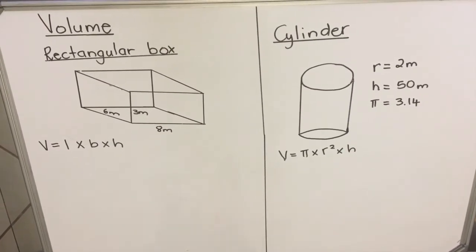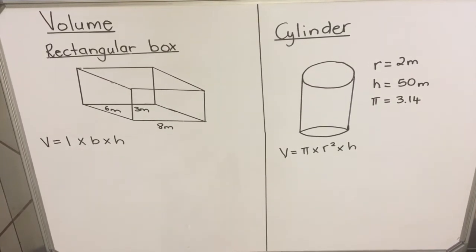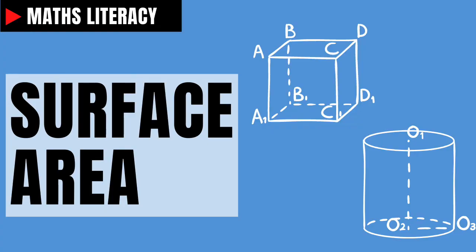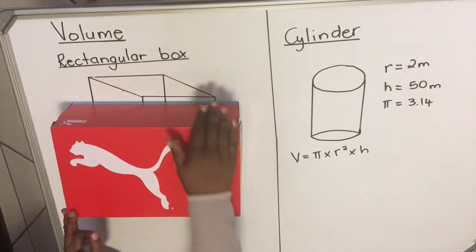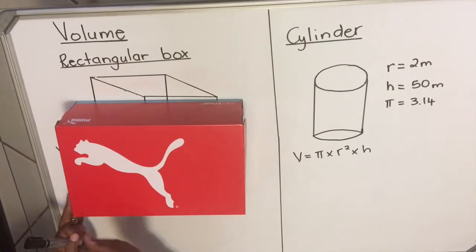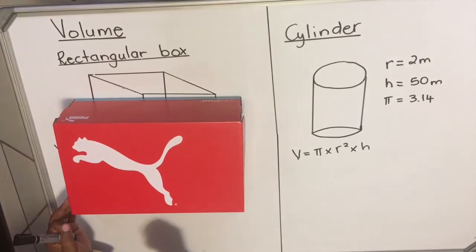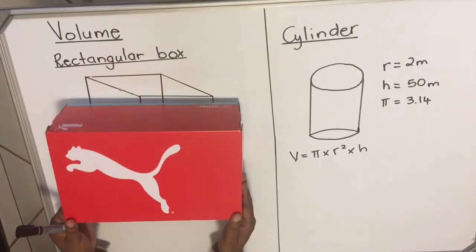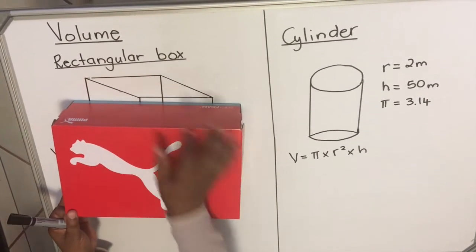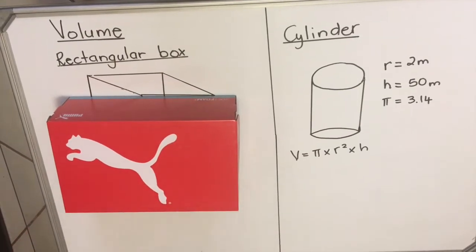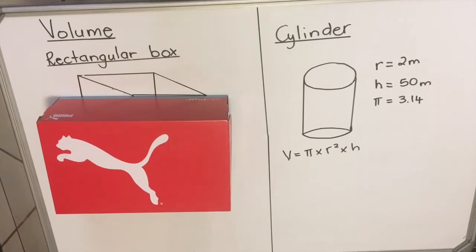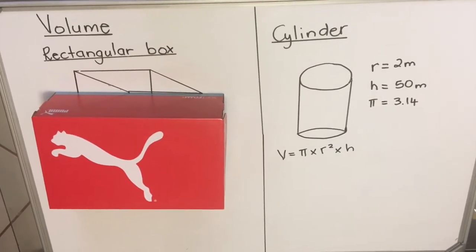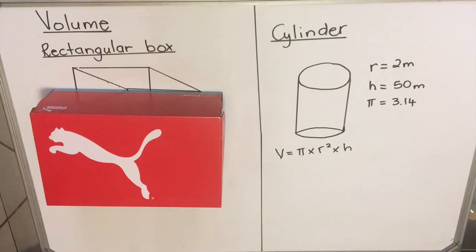Before we do that, I want to explain what volume is. When you look at this box, in our last video we did the surface area. Surface area is the outside part — all the faces of the box. The volume is the space that this box takes. It's everything including the inside, the space it covers in the environment. That's how volume and surface area differ.